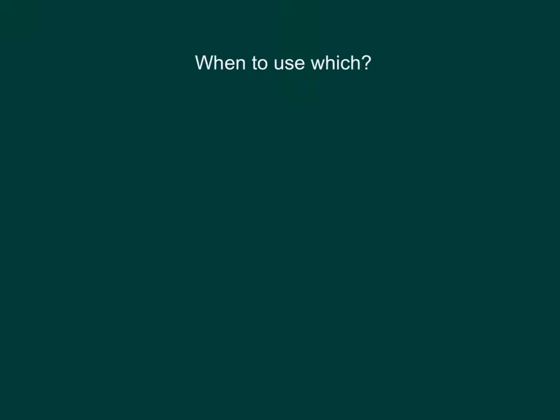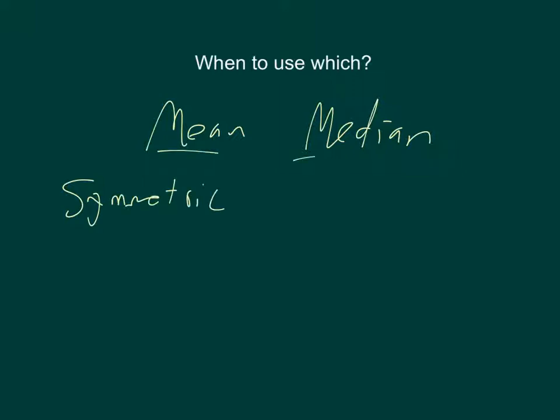And then the question is, well, when do I use the mean and when do I use the median? Okay. If I have data that's symmetric, I can use either one. It really doesn't matter. If it's exactly symmetric, that's unusual, but if it's exactly symmetric, then these two values are going to be equal to each other.